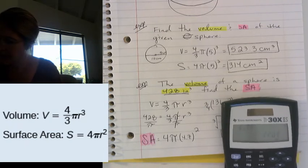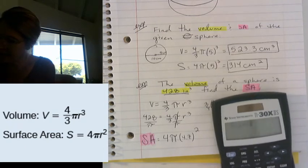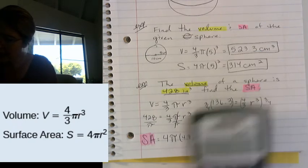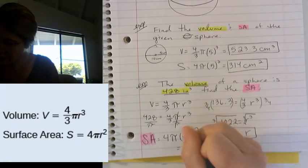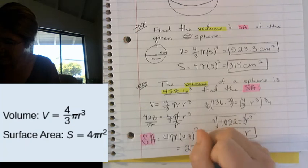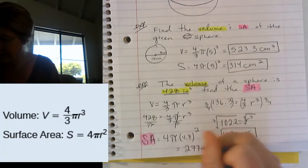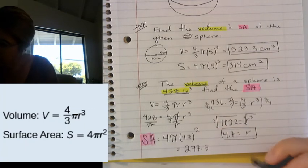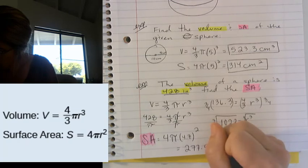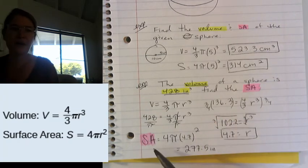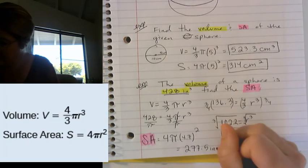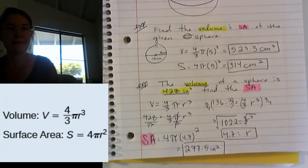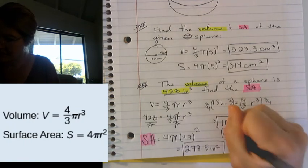And then times by 4 and times by π, 3.14. And we get 277.45. So I'm just going to round that to 5. And our unit was inches. And it's surface area, so it's going to be inches squared. Final answer. My radius was just plain inches.